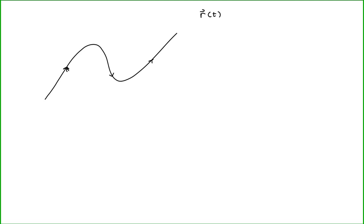Let's say we have a parameterized curve in space. This curve is defined by the position function with an x component, a y component, and a z component.